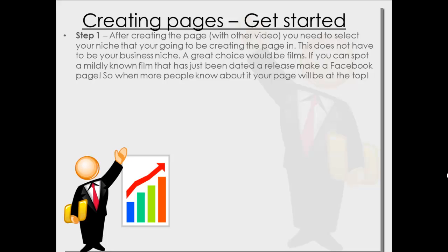You could even do things like a football game that just took place — people might search that, or football competition, etc. Use your imagination. So if you can spot a mildly known film that has just been given a release date, make a Facebook page. When more people know about it, the page will be at the top. You can go on IMDB or something like that to find new films that have come out. You don't want to be doing the new James Bond film because they're going to be coming out like a year before. But you want to be targeting films — throughout this video I'm going to use films as an example — targeting films that aren't going to have an unbelievable amount of interest, but still hundreds of thousands or millions of people are going to be searching for it.